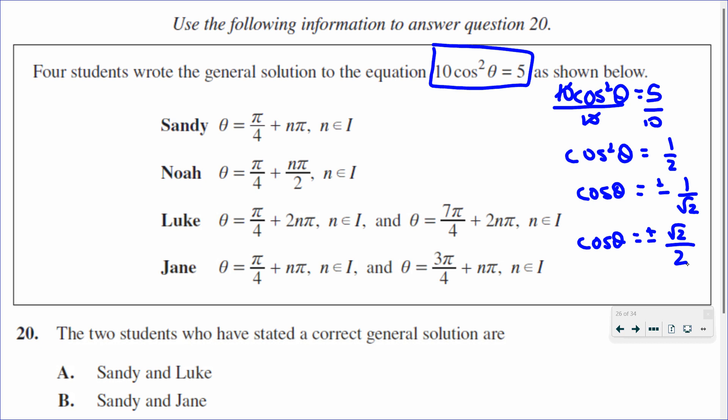So you can see why the plus or minus is important, because it looks like there is going to be four solutions, positive and negative. Cosine is positive in two quadrants and negative in two quadrants.